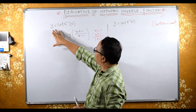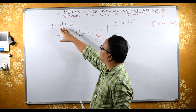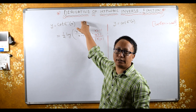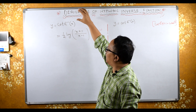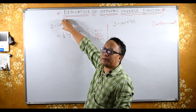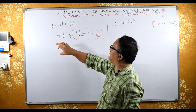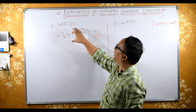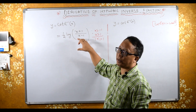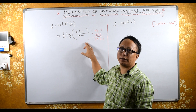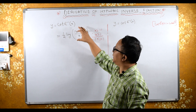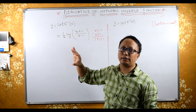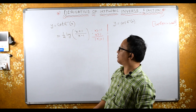The given is y equals to coth hyperbolic inverse x. Now coth hyperbolic inverse x is the same as half log of x plus 1 upon x minus 1. This proof you can check in one of my videos.